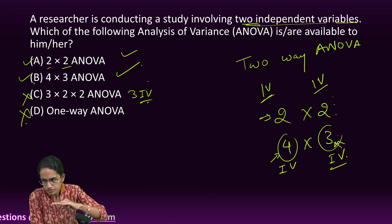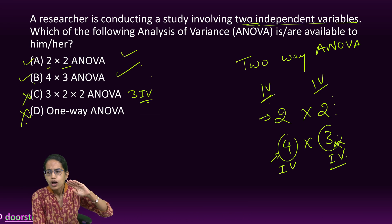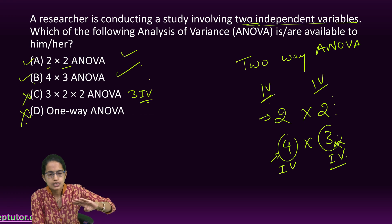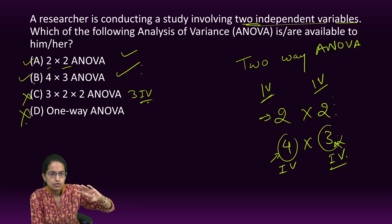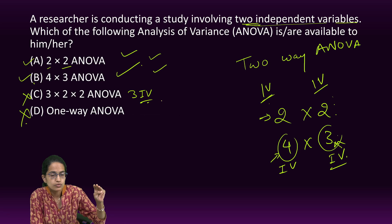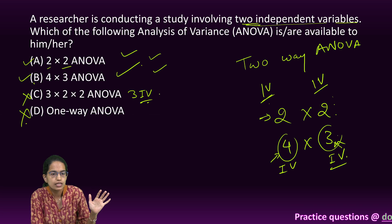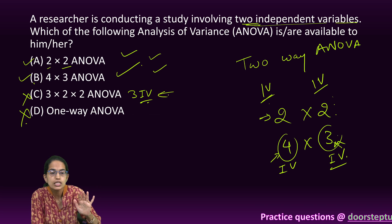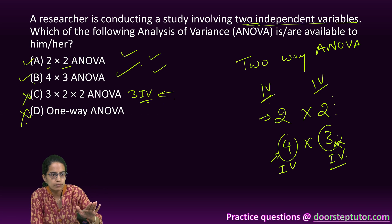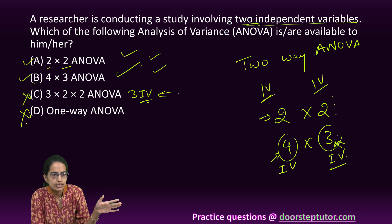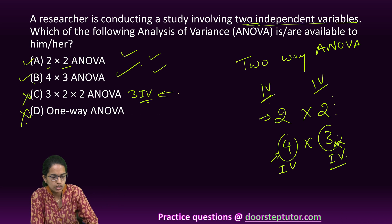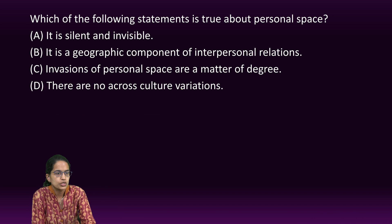The third option involves three independent variables, so it is not the right option. Only designs with exactly two independent variables qualify as two-way ANOVA.